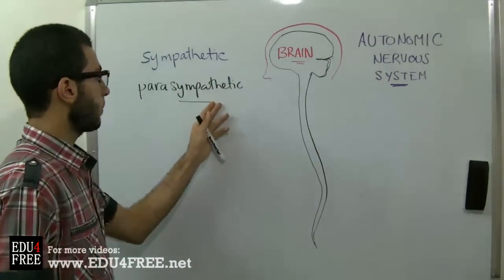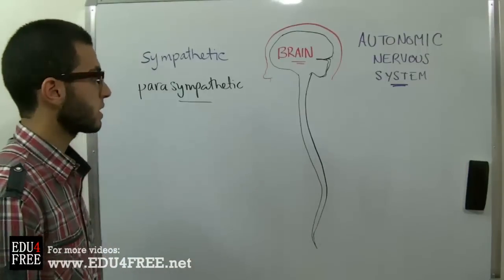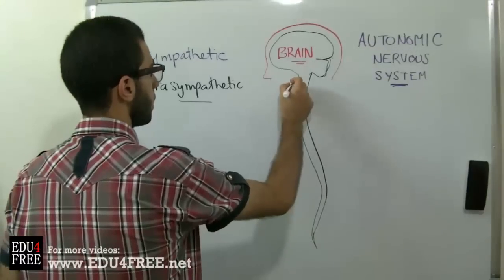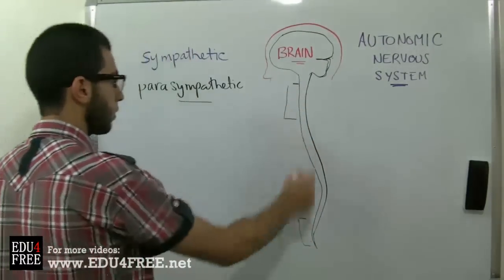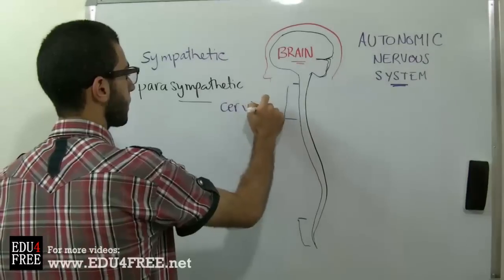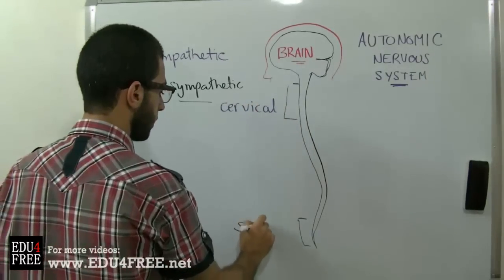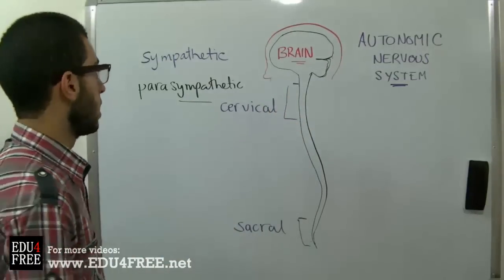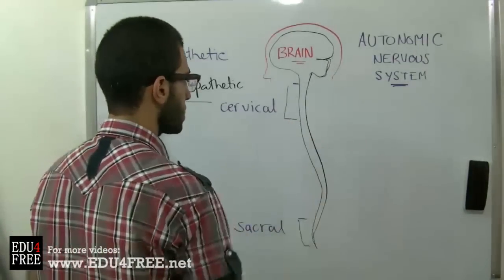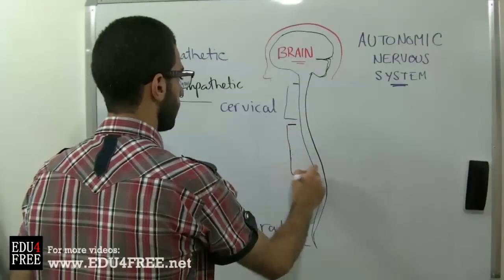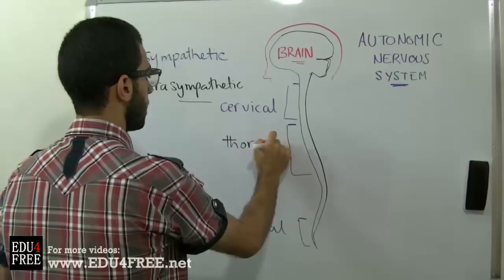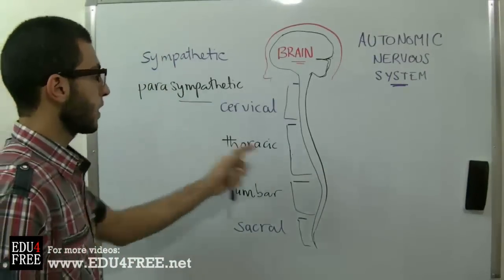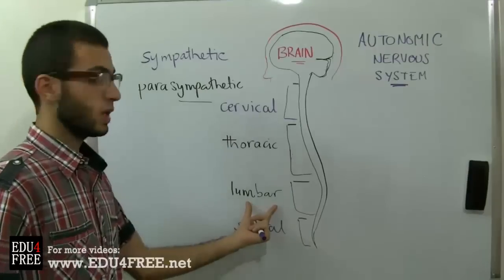As the Sympathetic and Parasympathetic Nervous Systems are part of the nervous system, they arise from the Spinal Cord. The Sympathetic Nervous System has roots in the Cervical and Sacral regions of the Spinal Cord. The Parasympathetic Nervous System arises from the middle region, which contains the Thoracic and Lumbar regions.